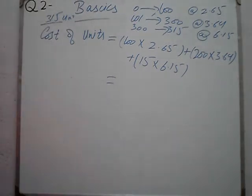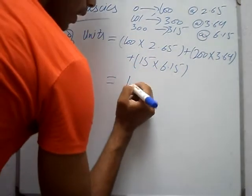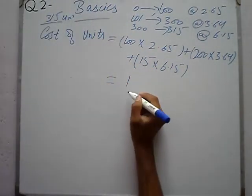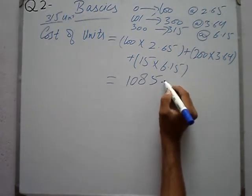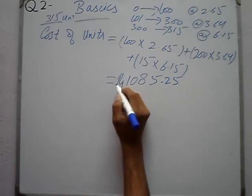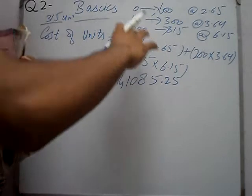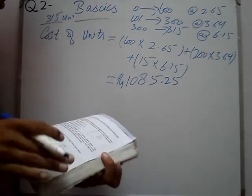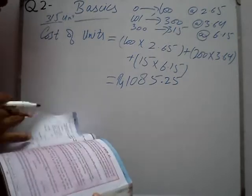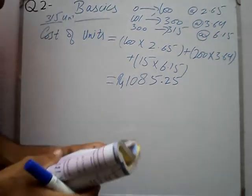When we solve this completely, our answer will be the cost of units. Solving this gives us Rs 1085.25. So the cost of units is Rs 1085.25. After this, we note that this is only the cost of units — it is not the final total yet.